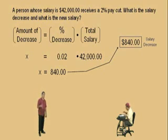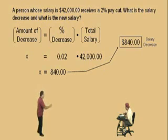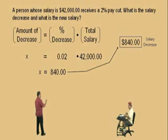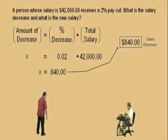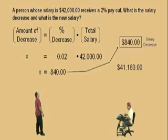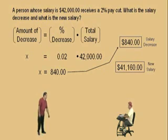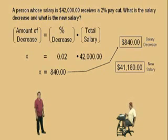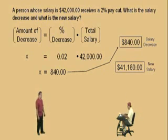Now, to get the new salary, Charlie, all you have to do is take the old salary of $42,000 and subtract the salary decrease of $840. And the new salary is $41,160. And that is the new salary. So it's not bad, right?